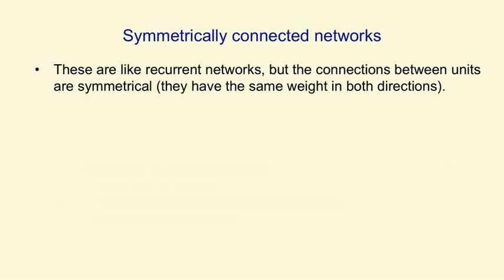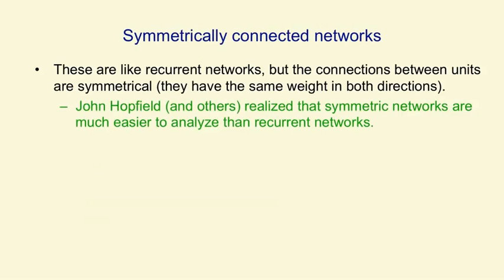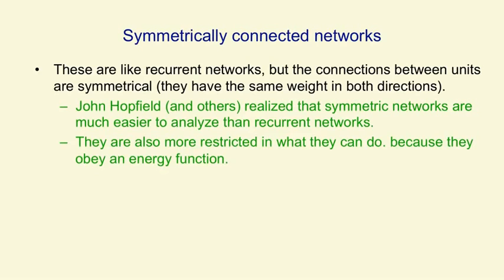Quite different from recurrent nets are symmetrically connected networks. In these, the connections between units have the same weight in both directions. John Hopfield and others realised that symmetric networks are much easier to analyse than recurrent networks. This is mainly because they're more restricted in what they can do, and that's because they obey an energy function. So they can't, for example, model cycles — you can't get back to where you started in one of these symmetric networks.